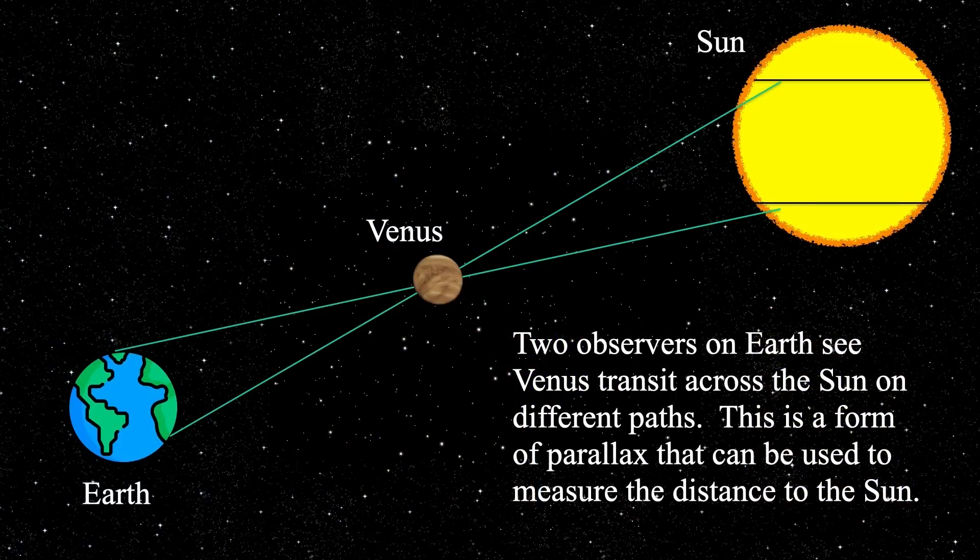But we can also use simple geometry to make extraordinarily good guesses as to the relative distances between the earth and the sun. Not the exact distances, but getting very, very close.